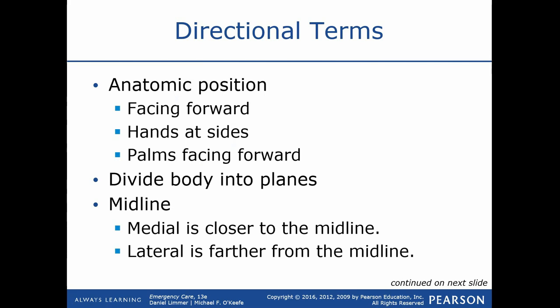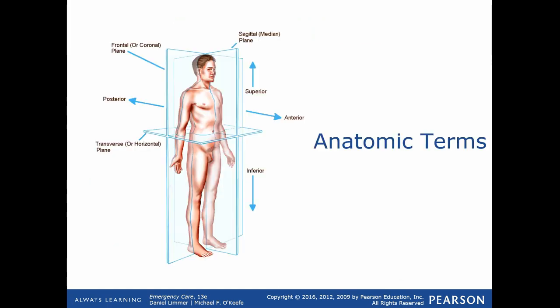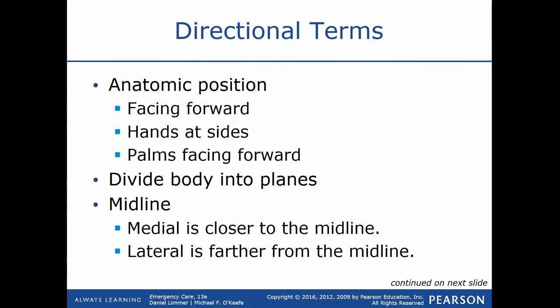When using anatomical terms for a patient, we picture them in the anatomical position — facing forward, hands at their side, palms forward. We use that position regardless of how the patient is actually positioned. From there, we can divide the body into planes as shown in the illustrations.